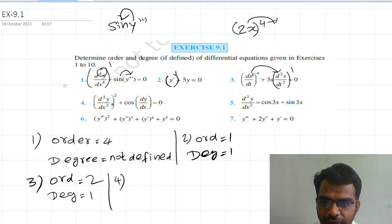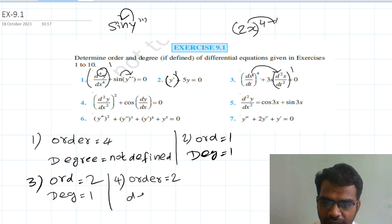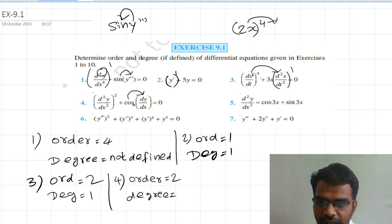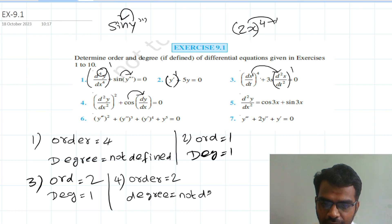Fourth question: (d²y/dx²)² + cos(dy/dx) = 0. The order is d²y/dx², so order equal to 2. Now for degree: cos(dy/dx) has a derivative inside a cosine function. The derivative is inside the trigonometric function, so degree is not defined.